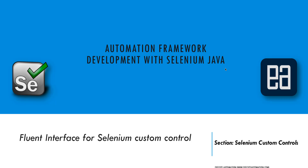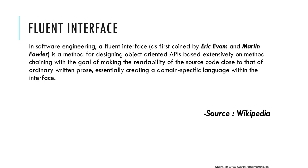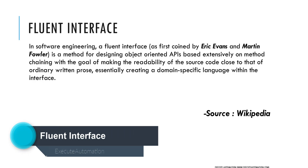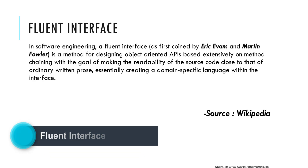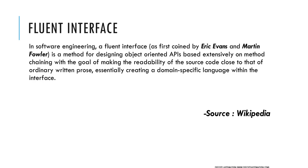Fluent interface for Selenium custom controls. In our last video we discussed how we can implement or extend our custom controls. In this video we're talking about fluent interface. In software engineering, a fluent interface is a method for designing object-oriented APIs based extensively on method chaining, with the goal of making the readability of source code close to that of ordinary written prose, essentially creating a domain-specific language within the interface.